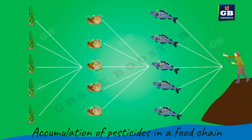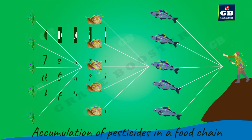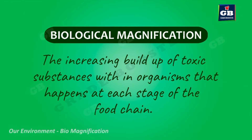If a man consumes such contaminated fish in large quantities, all the chemical residues present in the fish enter his body. In this way, pesticide and insecticide residues get deposited and accumulated in our bodies. This phenomenon is called biological magnification.